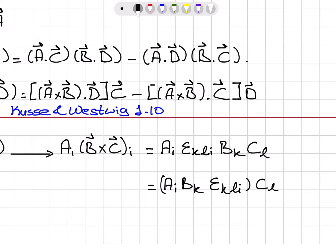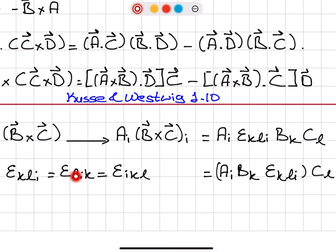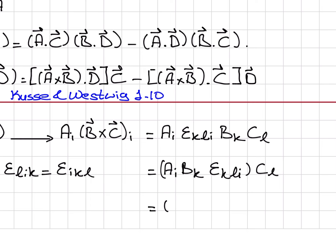Now I note that at this point, epsilon_KLI is the same thing as epsilon_LIK, which is the same thing as epsilon_IKL, using cyclic permutations: KLI, LIK, IKL — and I'm getting the same thing. So I'm going to replace epsilon_KLI with epsilon_IKL, so that this becomes A_I out front.